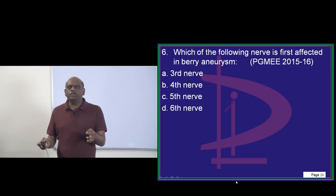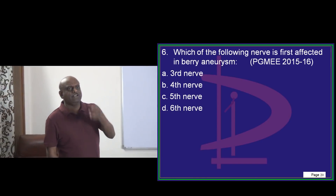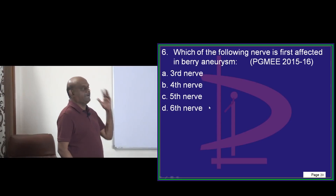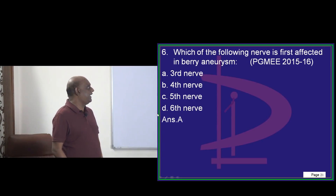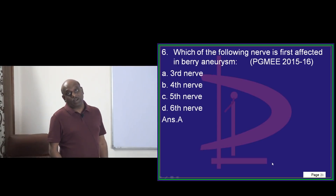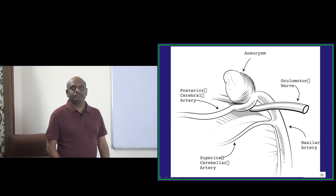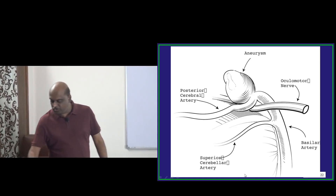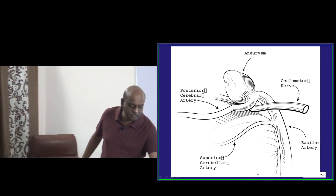Berry aneurysm — what is the first cranial nerve that gets affected? It is the third cranial nerve, which is the one compressed in the berry aneurysm. You should be very sure about this.